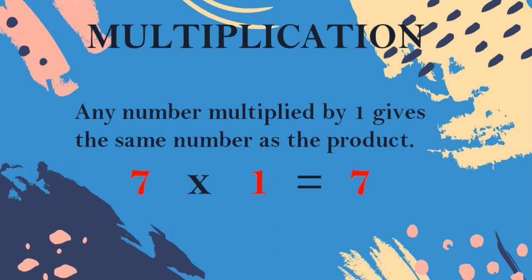Any number multiplied by 1 gives the same number as the product. Example: 7 1s are 7. If 7 is multiplied by 1, the same 7 is the product.